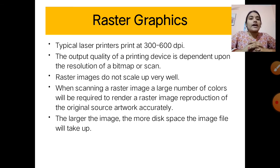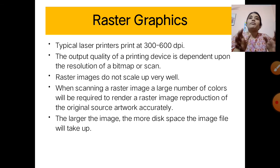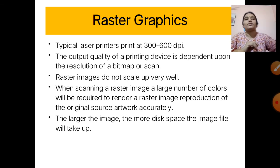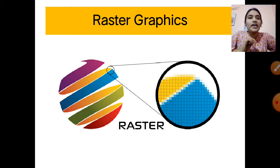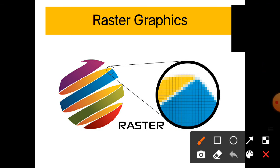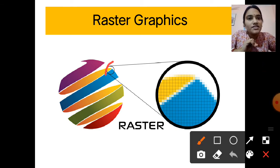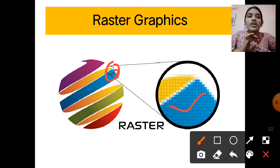The larger the image, the more disk space the image file will take up. Here is an example of raster graphics — there is a ball, and when we enlarge a small portion of it, it looks pixelated, made up of small squares. This is the example of a raster image.